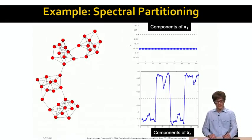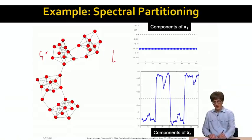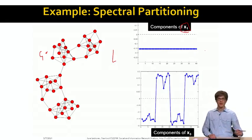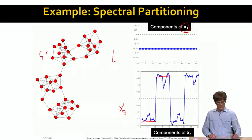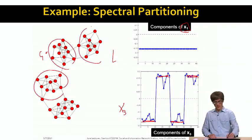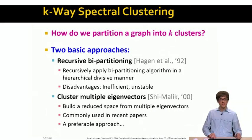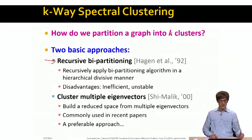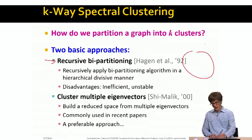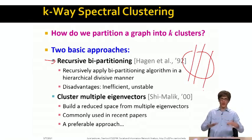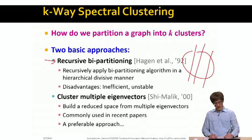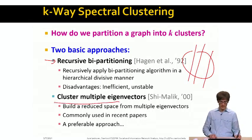Let me show you some examples. For the same graph G with Laplacian matrix L and its eigendecomposition, the components of vector x1 all have exactly the same value, as we have proven. But the components of the third smallest eigenvector reveal distinct groupings — the bottom cluster, the second cluster, the third cluster, and a fourth cluster. This gives us an idea of how to partition a graph into k clusters. There are two possible approaches: one is recursive bipartitioning — split the full graph in two, then split each piece recursively until you get smaller and smaller pieces.